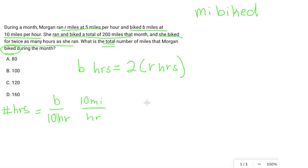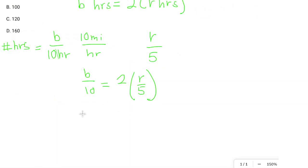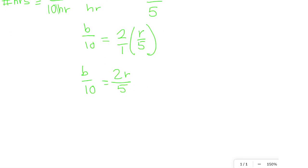So now we know that this number of hours can be shown in B over 10. And the same thing with R can be shown as R over 5. So B over 10 is equal to 2 times R over 5, which means B over 10 is equal to 2R over 5, because we can think of this as 2 over 1, a little fraction multiplication there. So whenever we have equivalent fractions, we're going to cross multiply. So 5B is equal to 20R.